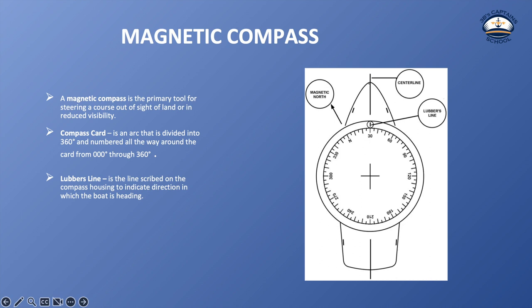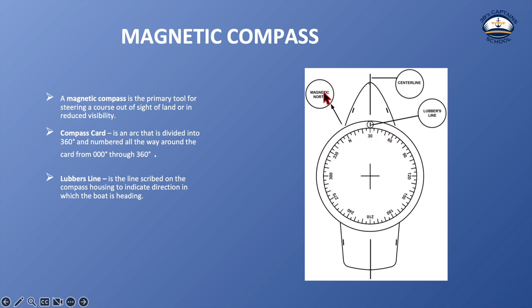A magnetic compass is the primary tool for steering a course out of sight of land or in reduced visibility. A compass card is an arc divided by 360 degrees and numbered all the way around from 0 to 360, with 0 or 360 at north. The lubber's line is a line scribed in the compass housing to indicate the direction in which the boat is heading — it is lined up with the bow of the boat's centerline. When you turn the boat, the compass card moves because north holds on magnetic north, so the bow changes the direction or bearing it's going.